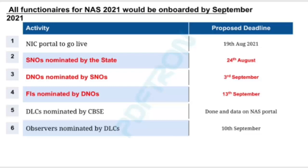Activity timeline for NAS portal going live — proposed deadline of 19th August 2021. SNOs nominated by the state: 24th August. DNOs nominated by SNOs: 3rd September. FIs nominated by DNOs: 13th September. DLC nominated by CBSE, DUN and data on NAS portal. Observers nominated by DLCs: 10th September.